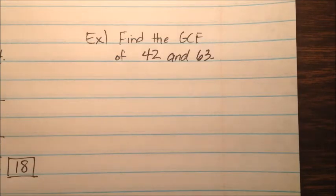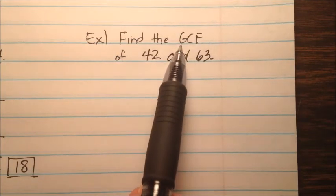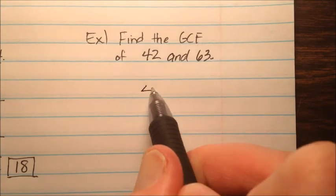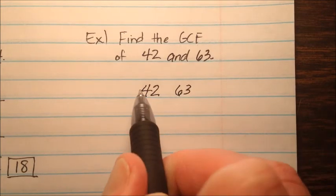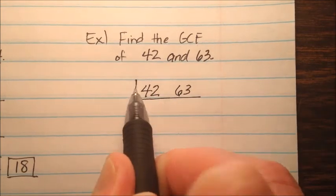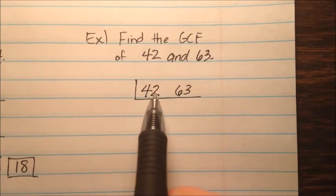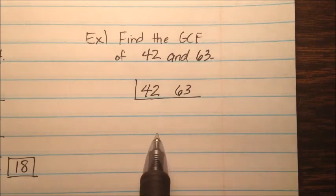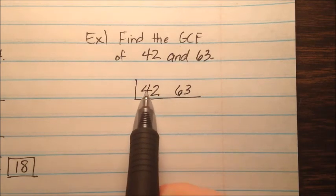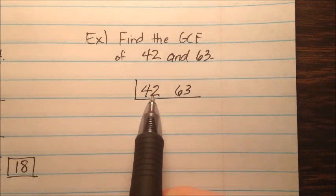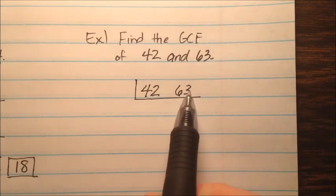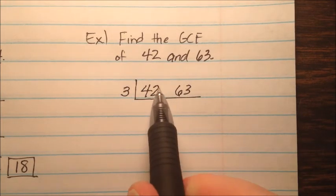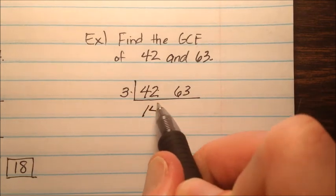In the last example, we're going to find the GCF, or greatest common factor, of 42 and 63. So 42 and 63 go side by side. Is there any number that will divide them evenly? It looks like 3 will, because 4 plus 2 is 6, which is divisible by 3, and 6 plus 3 is 9, which is also divisible by 3. So 42 divided by 3 is 14.